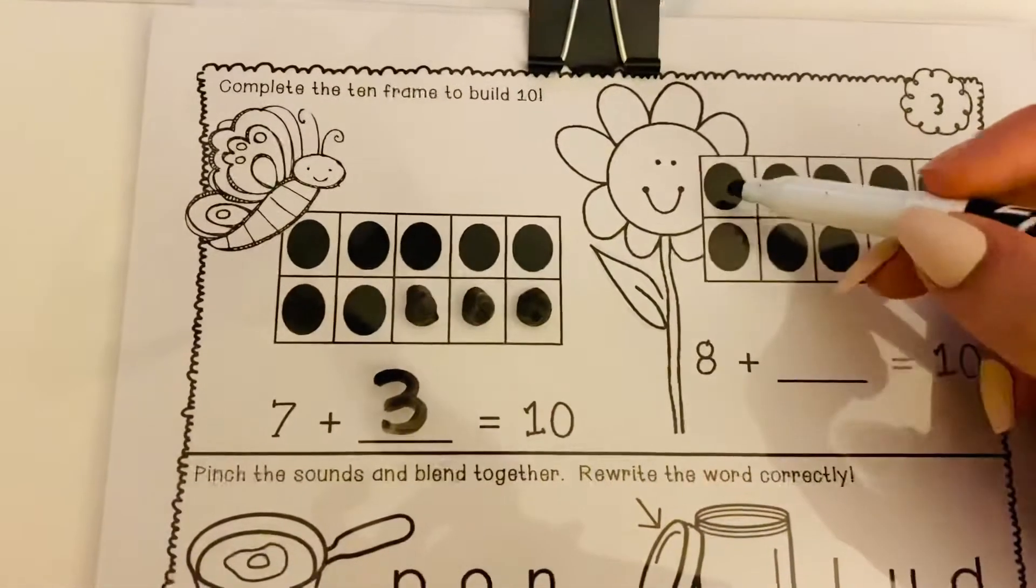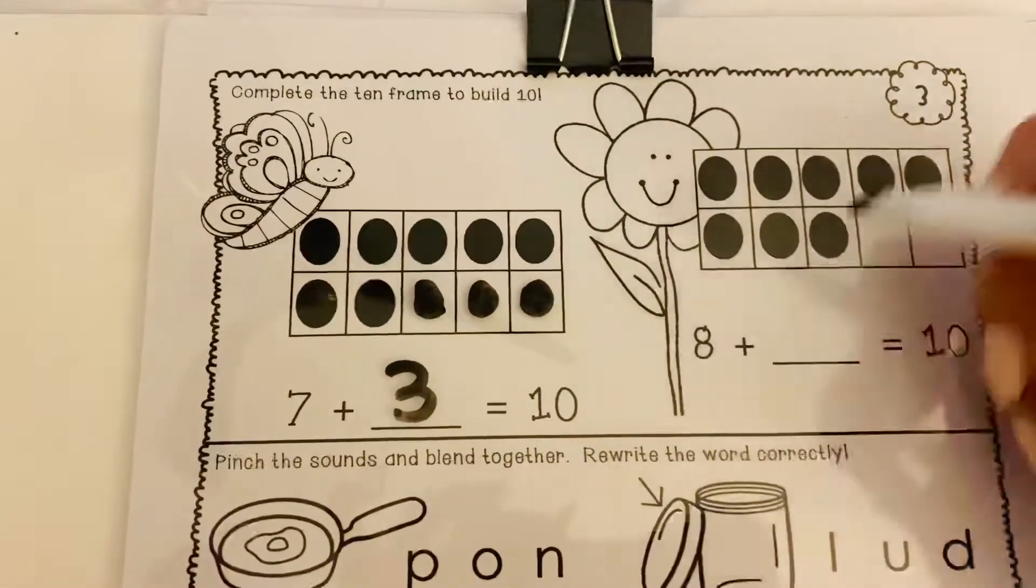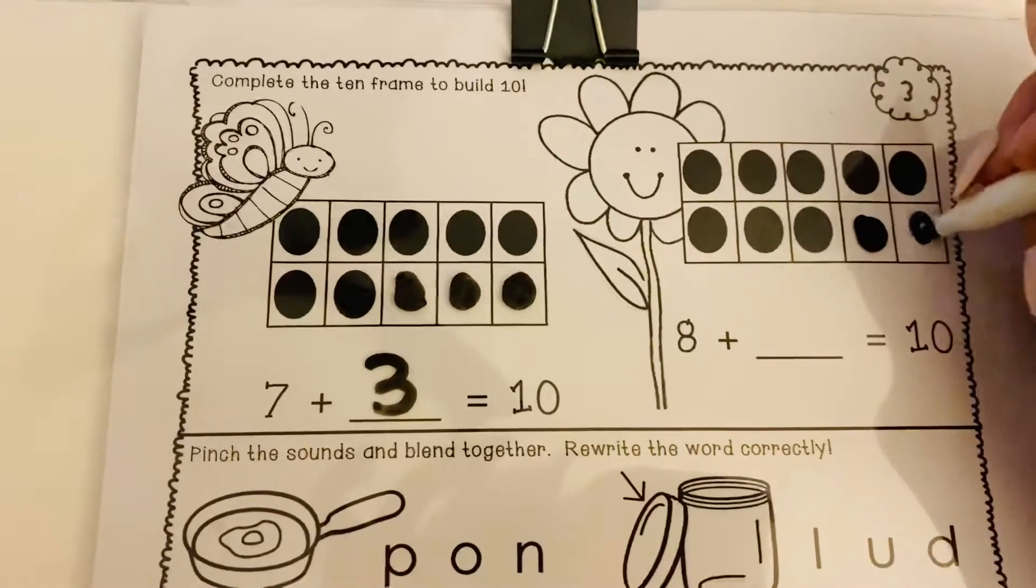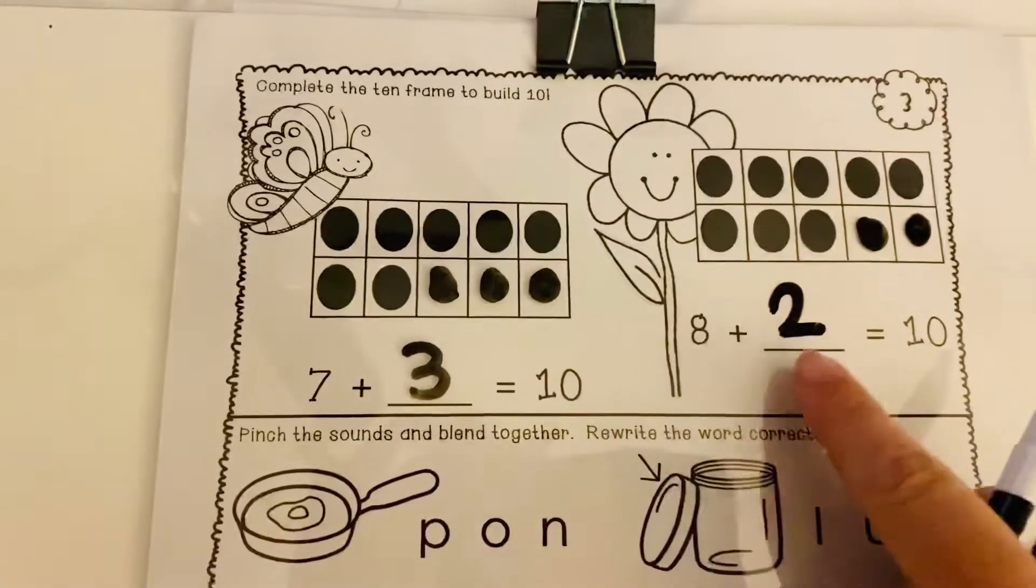Now we go over here and we see 1, 2, 3, 4, 5, 6, 7, 8 right here. Plus, let's fill in our 10 frame. 1, 2. So we put a big number 2 right here. That means 8 plus 2 equals 10.